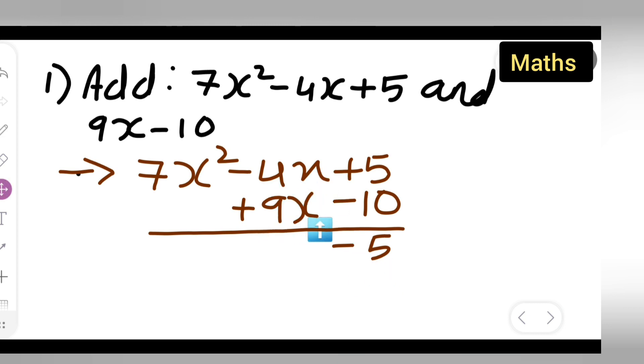After that, minus 4x is there, 9x is there. You will have to subtract it again. So 9x minus 4x will give you 5x. So it will be plus 5x.